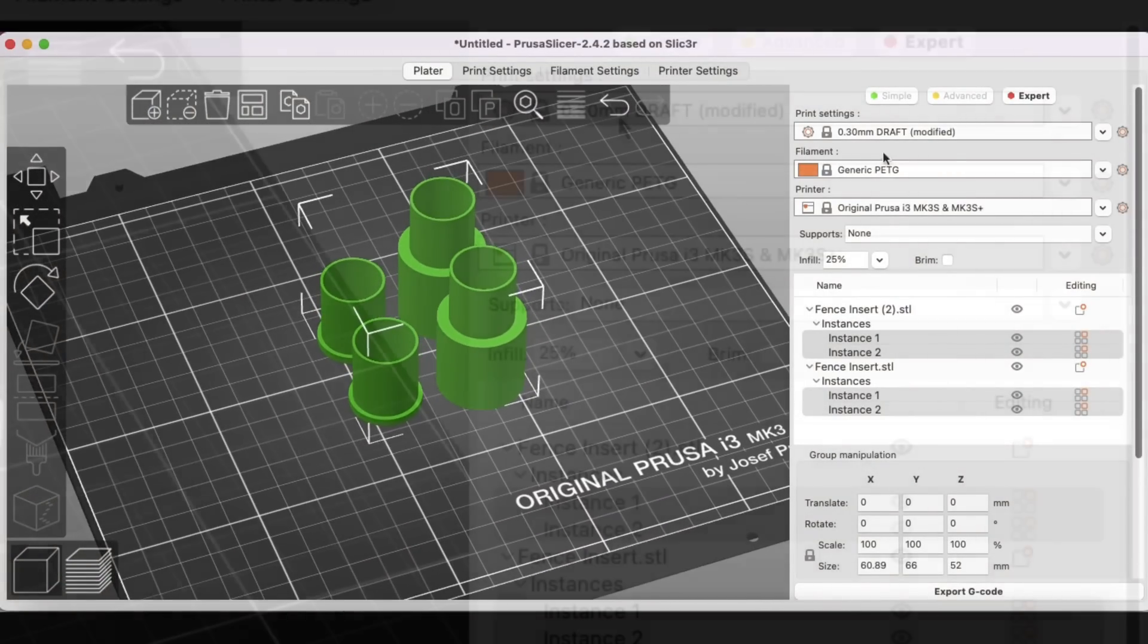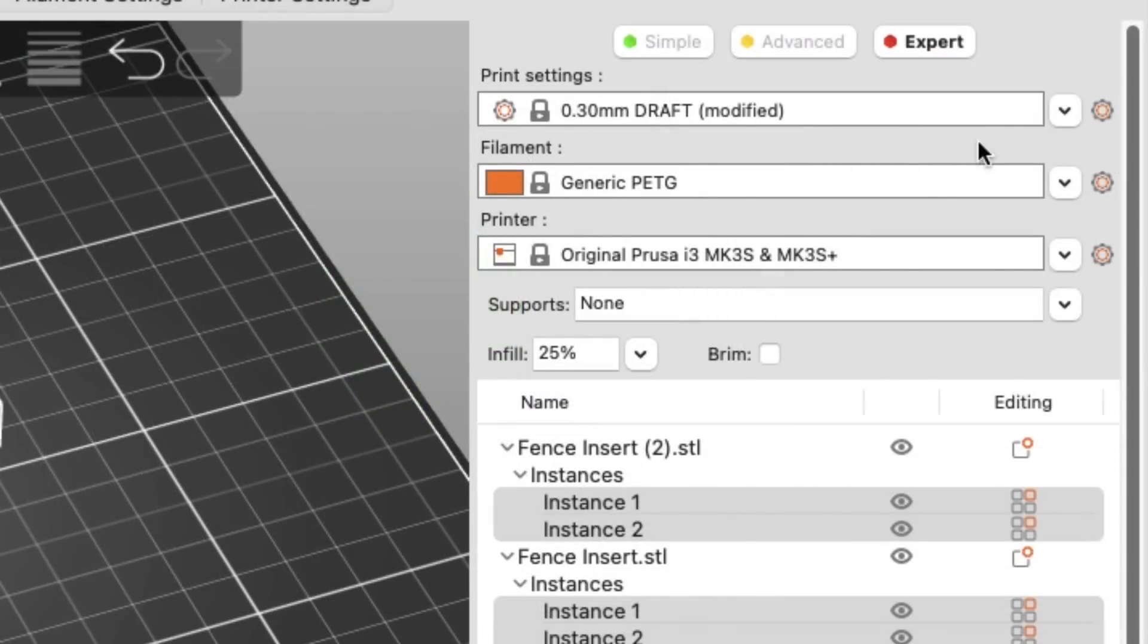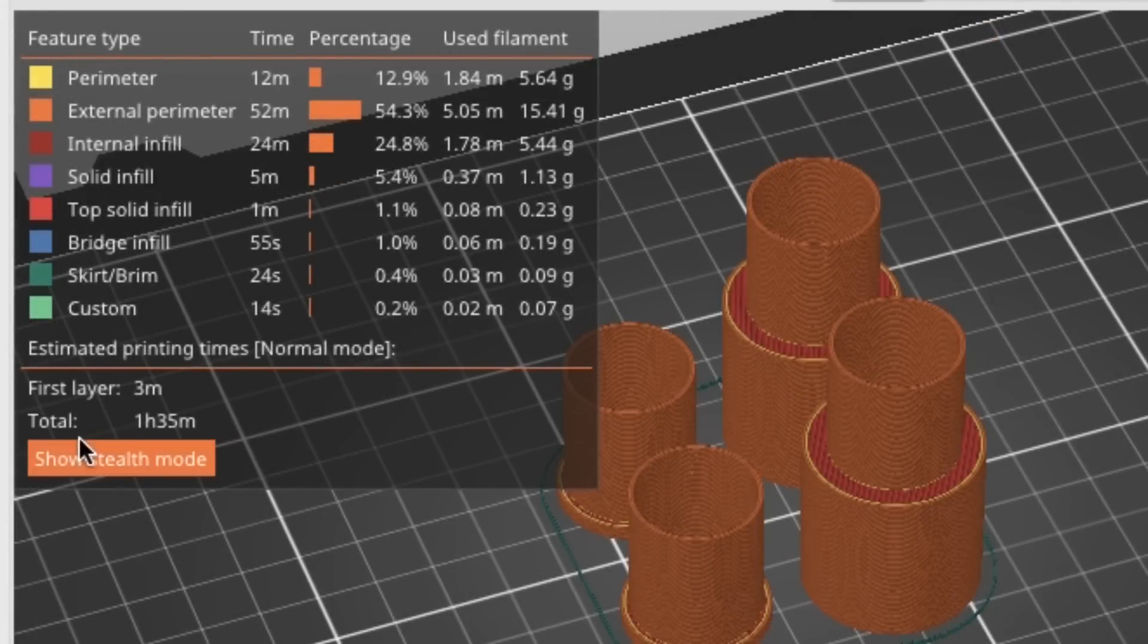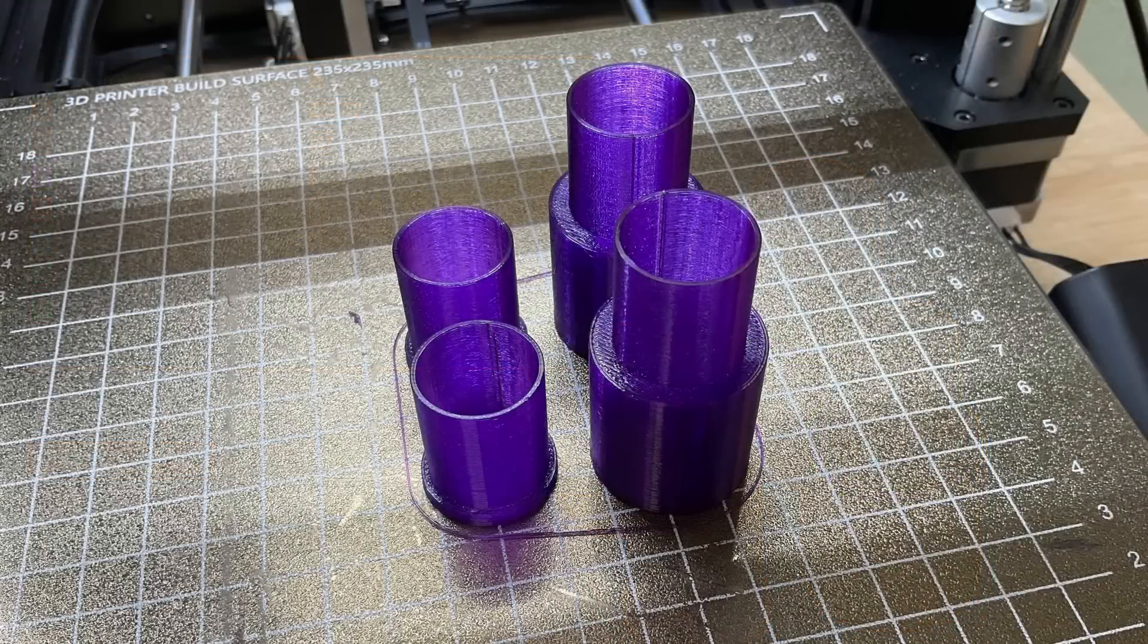I put two of each on the bed and I sliced it at a 0.3 millimeter draft, general PETG setting, the MK3 profile with an infill of 25%. Other than that I didn't change anything. I just sliced it and it said it would take one hour and 35 minutes to print all four of these. And the results were really good.